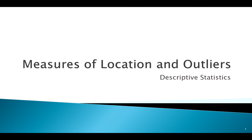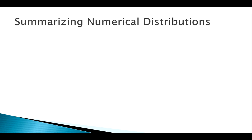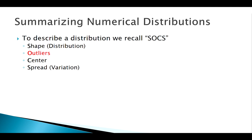So remember when we are describing some sort of quantitative or numerical distribution, the acronym we want to keep in mind here is SOCS. That stands for shape, outlier, center, spread.